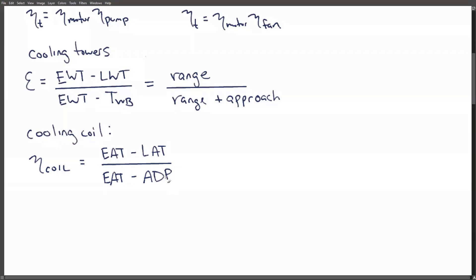So a 100% efficient coil would in theory reduce the leaving air temperature all the way to the apparatus dew point. Of course that never happens in reality, but oftentimes in problem solving we assume that it does unless there's some specific reason not to. Another way of expressing the coil efficiency is this idea of a bypass factor, where the bypass factor is one minus the coil efficiency.